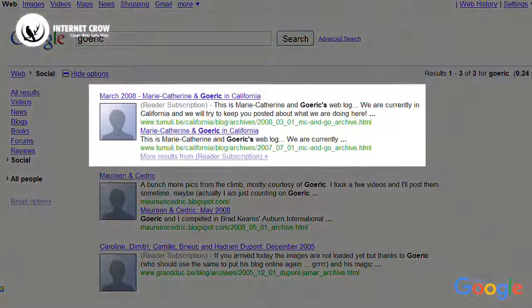The third way we surface content from your social circle is through Google Reader. For example, if you subscribe to a blog in Google Reader, then we can surface a post from that blog in your social search results.